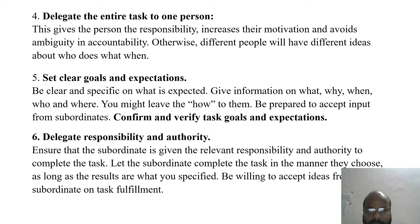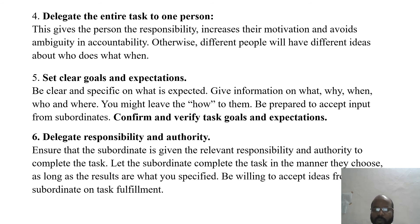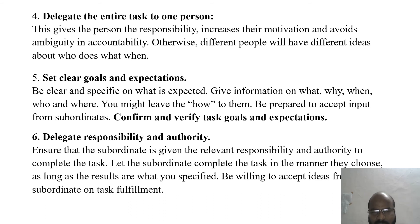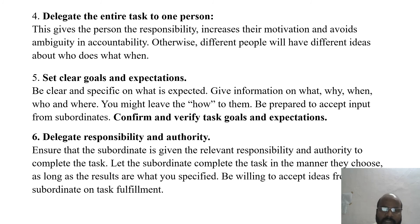Set clear goals and expectations: be clear and specific on what is expected. Give information on what, why, when, who, and where — you might leave the how to them. Be prepared to accept input from the subordinates and confirm task goals and expectations. Delegate responsibility and authority: ensure that the subordinate is given the relevant responsibility and authority to complete the task. Let the subordinate complete the task in the manner they choose, as long as the results are what you specified, and be willing to accept their ideas on task fulfillment.